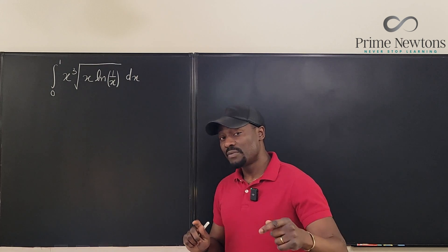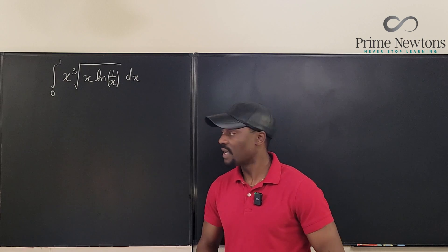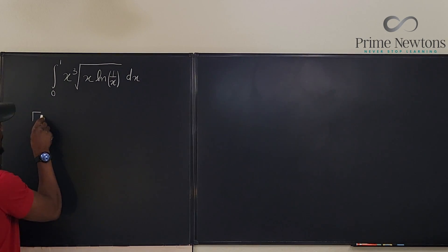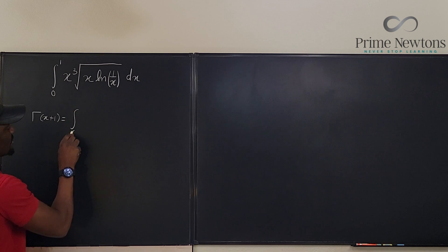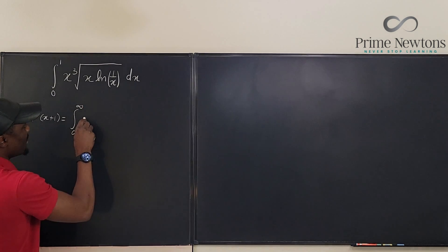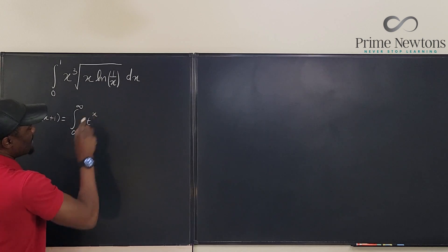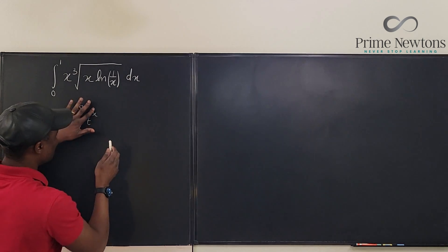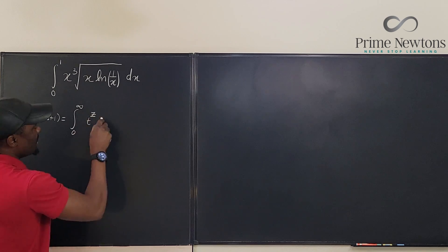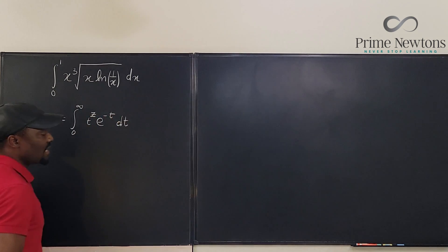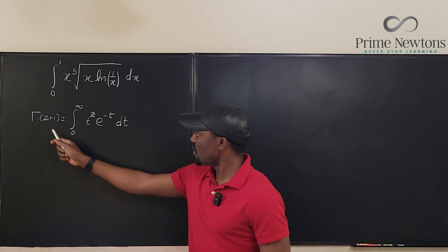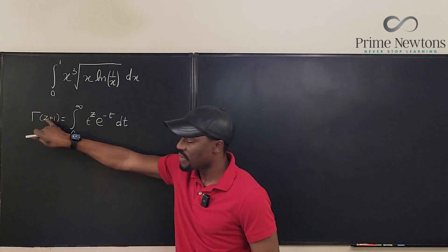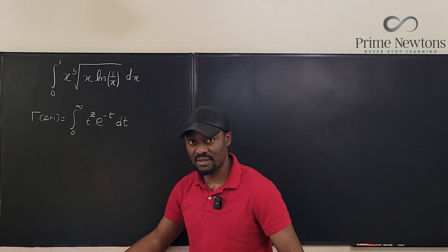I'm going to start by writing the Gamma function, or maybe the Pi function — you choose whichever one you want — and we're going to use it to evaluate this. The Gamma of x plus one is equal to the integral from zero to infinity. Let's use z, since that is the general way of defining the Gamma function. So the Gamma of z plus one will be the integral from zero to infinity of t to the z, e to the negative t, dt.